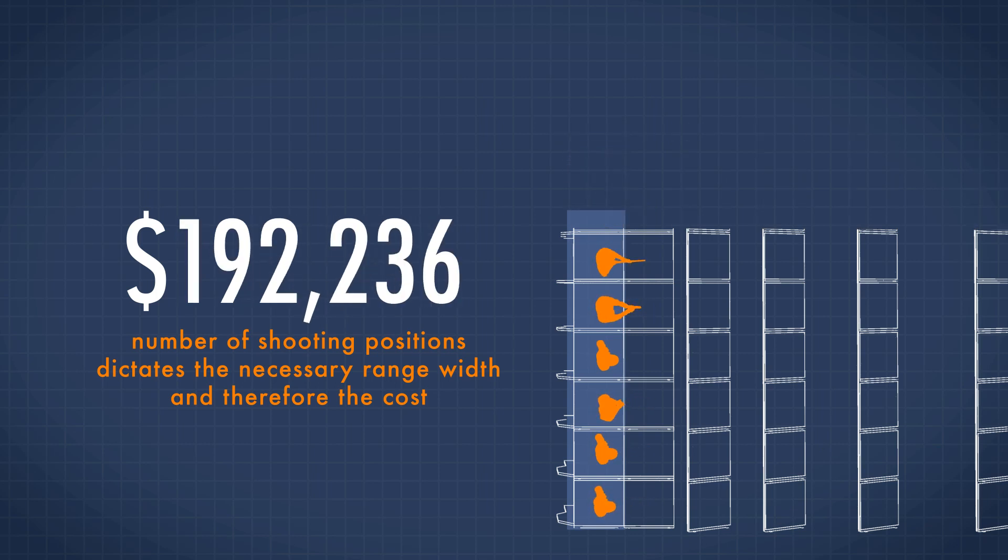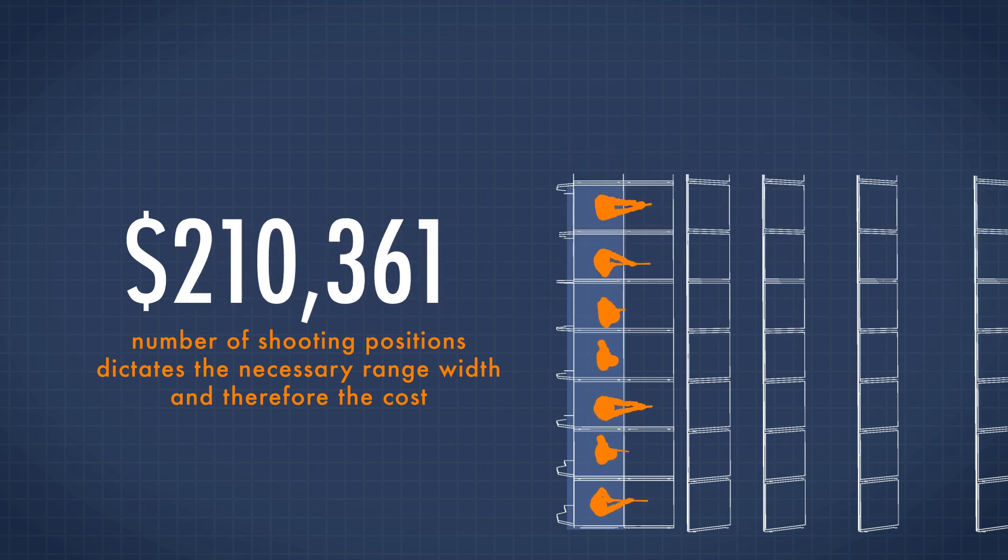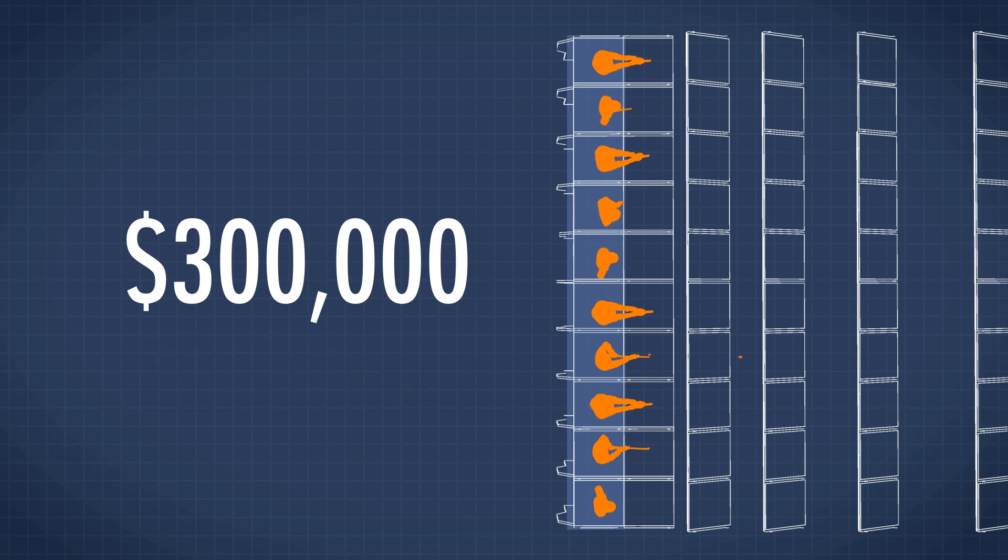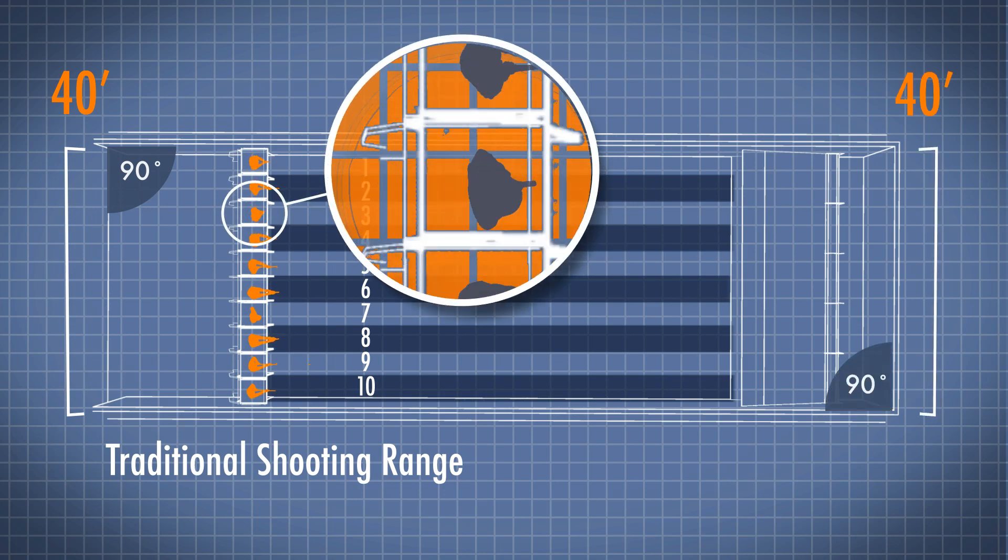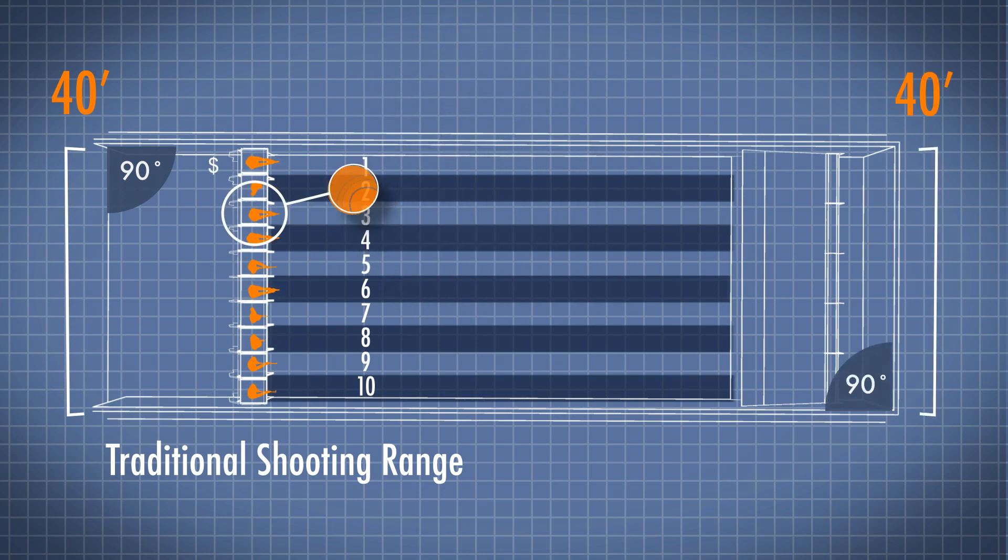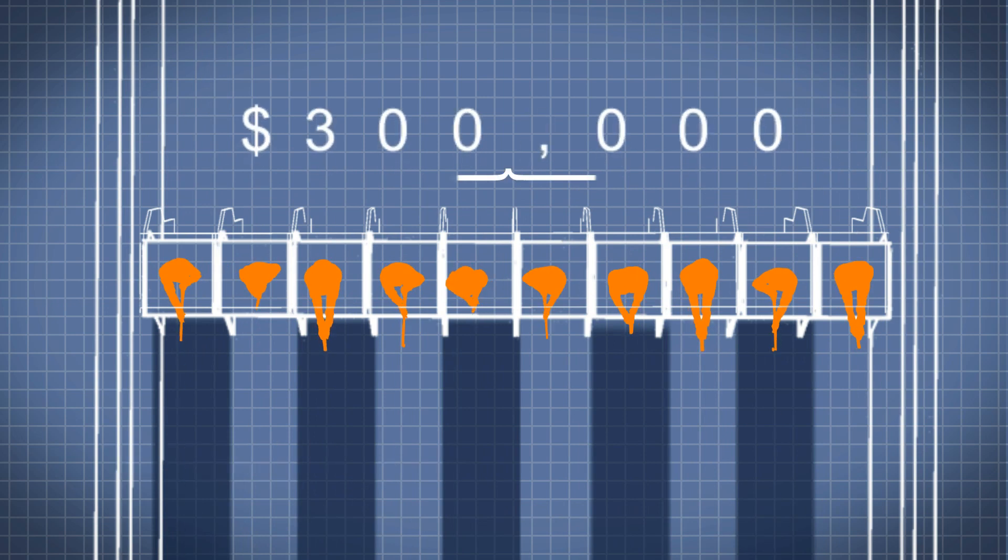A problem that has long plagued the shooting industry, but a problem that can be solved using science. Traditionally, a 10-lane shooting range would be 40 feet wide at the firing line and 40 feet wide at the backstop. This permits each shooting position to be 4 feet wide and can cost upwards of $300,000.